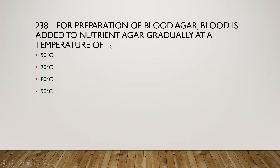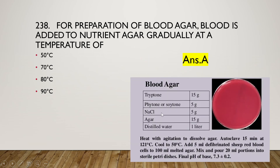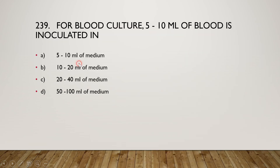Next question: for preparation of blood agar, blood is added to nutrient agar at a temperature of — the right answer is option A, 50°C. To prepare blood agar: heat with agitation to dissolve the agar and autoclave 15 minutes at 121°C, then cool to 50°C, add 5 ml defibrinated sheep red blood cells to 100 ml melted agar, then mix and pour 20 ml portions into sterile petri dishes.